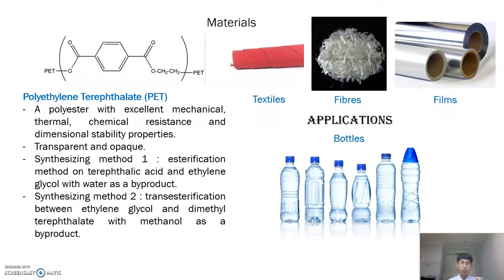Let's look at our input material: polyethylene terephthalate, or PET for short. PET is a polymer from the polyester family with excellent mechanical, thermal, chemical resistance, and dimensional stability properties. It is also transparent and opaque. There are two ways of synthesizing PET: the esterification reaction between terephthalic acid and ethylene glycol, which creates PET and water as a byproduct, or the transesterification reaction between ethylene glycol and dimethyl terephthalate, which creates PET and methanol as a byproduct. 60% of global PET production is used for water bottles, and PET also has applications in textiles, fibres, films, and bottles.